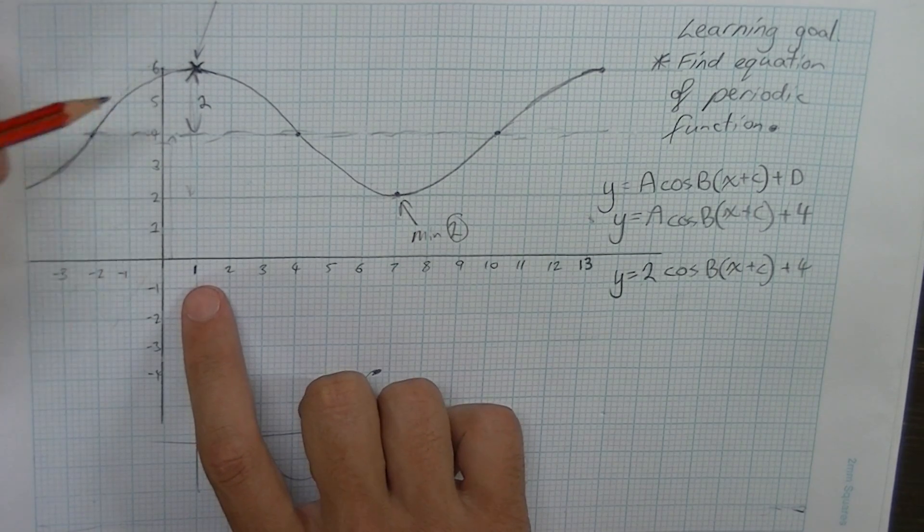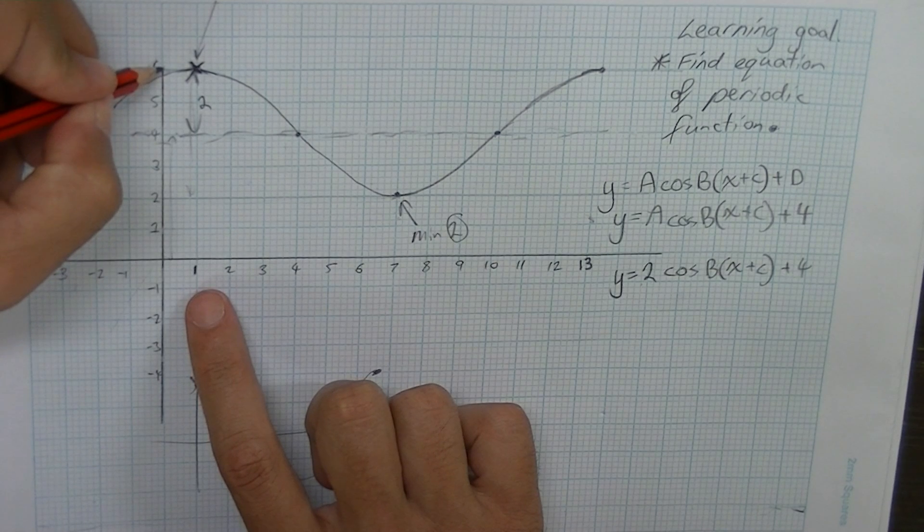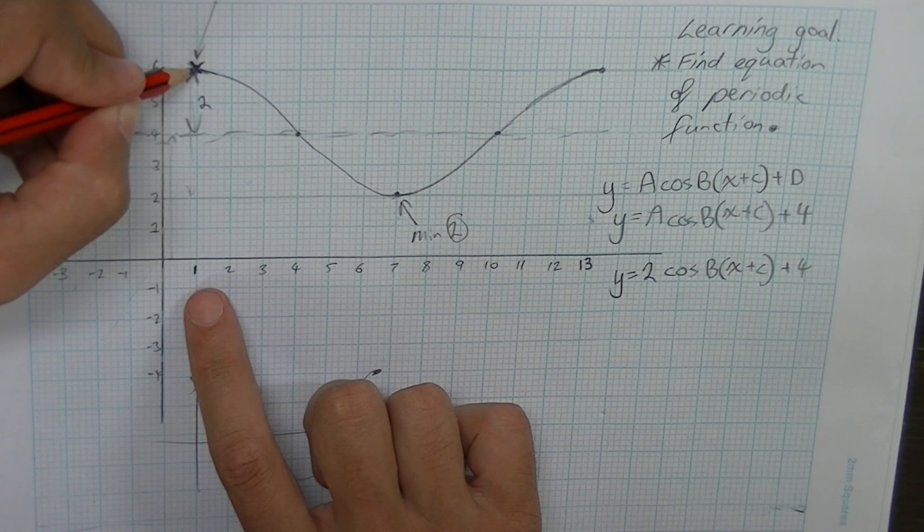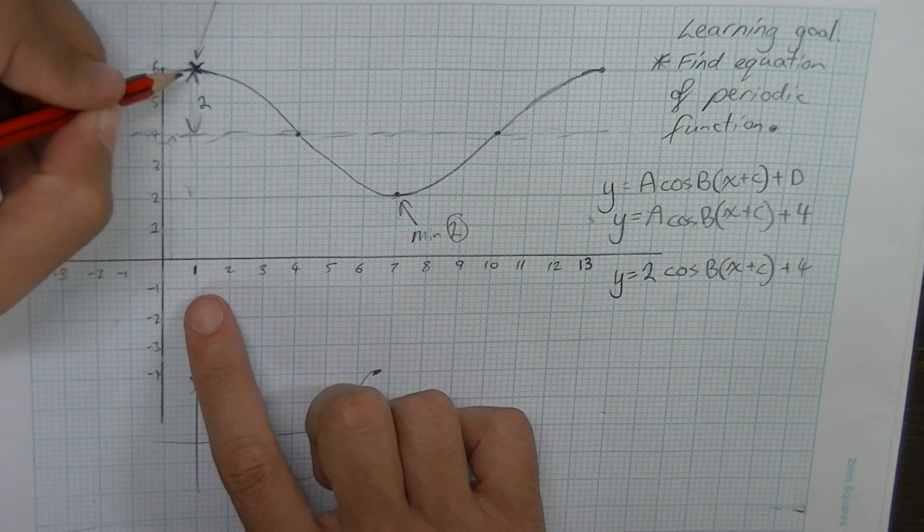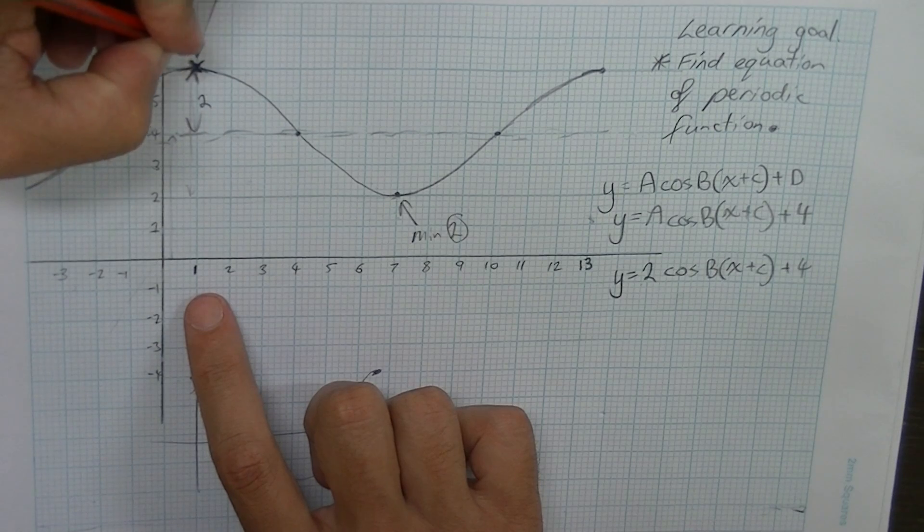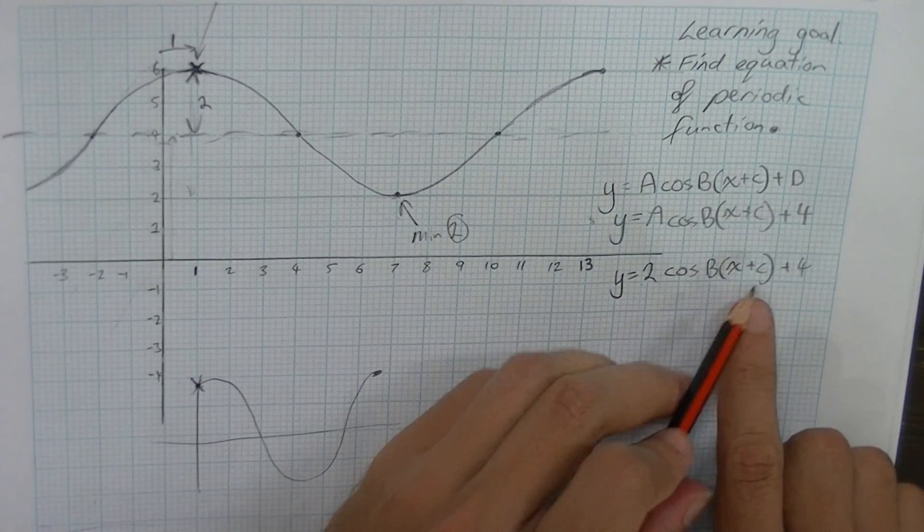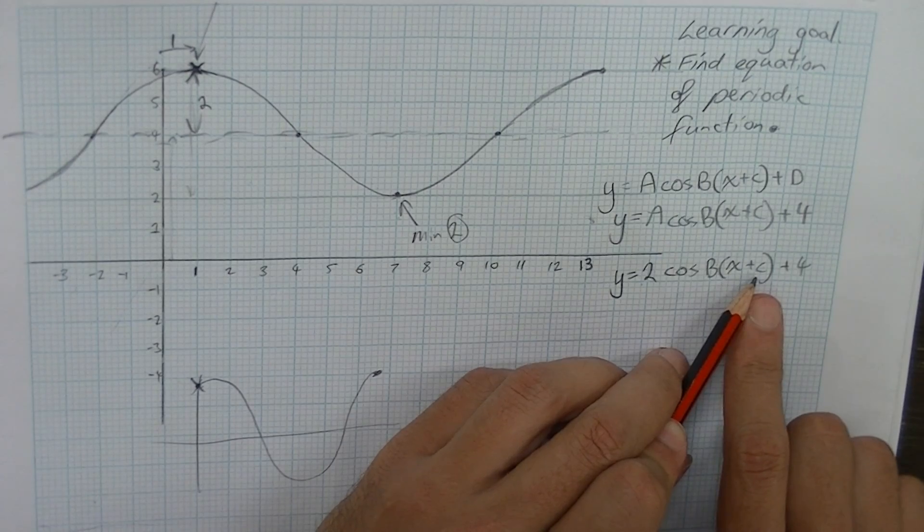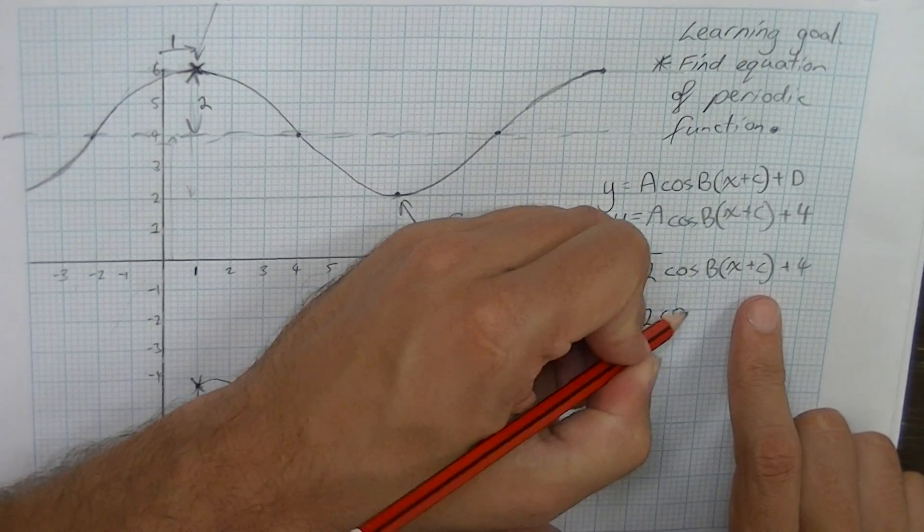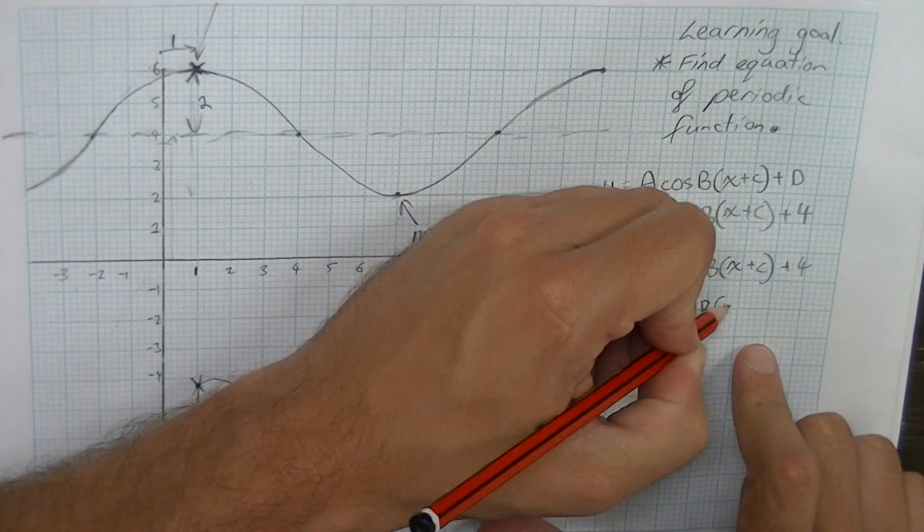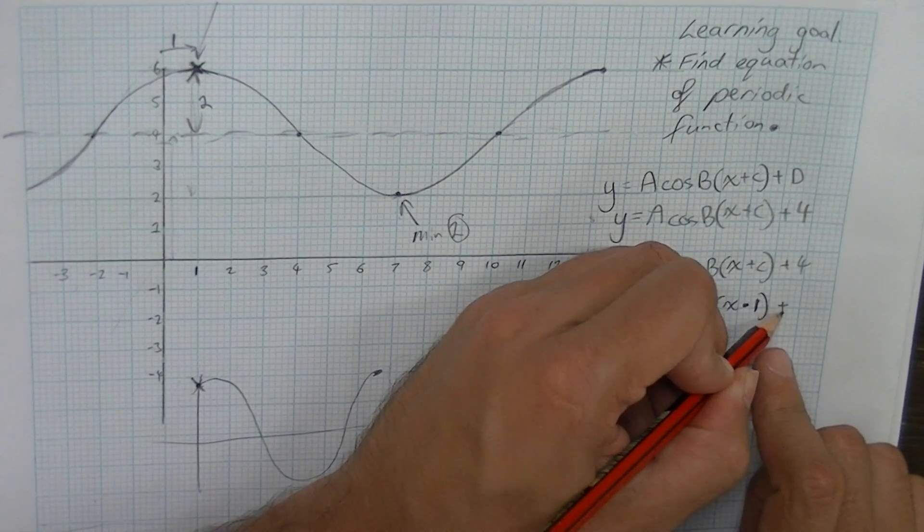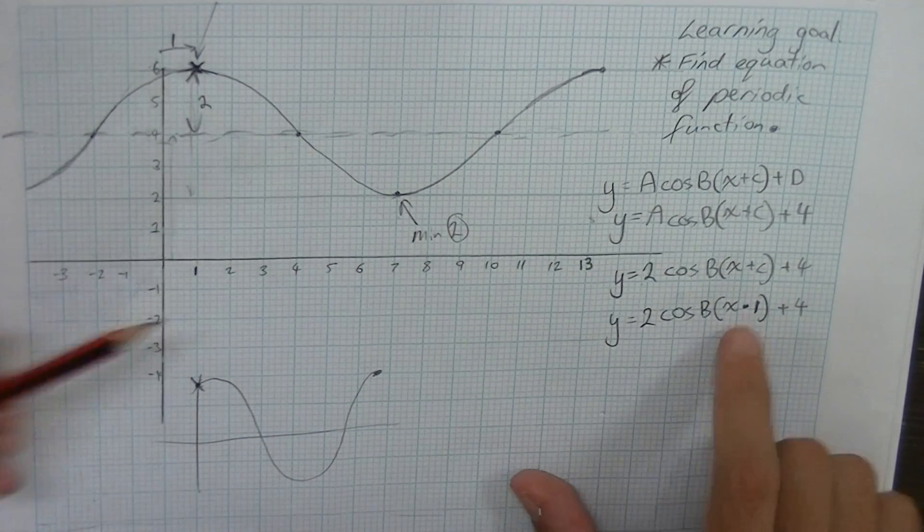So that means that our c value is negative 1. Remember that our c value does the opposite of what you would expect. If it's moved one space to the right it means that our c value is negative 1. So the distance from our origin to our starting position is 1. Therefore our c value is negative 1. y equals 2 cos b x minus 1 plus 4.